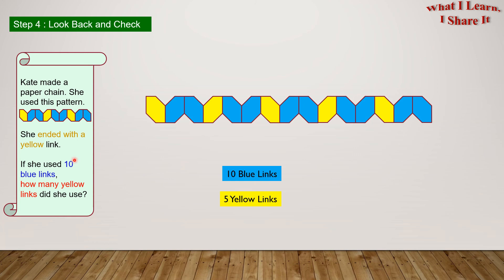So, we finished the part where she used ten blue links. But she ended with a yellow link, right? So, once again, we are going to put another yellow link, which makes six yellow links. And we found this answer out in the previous way we solved.